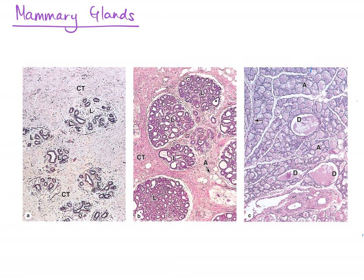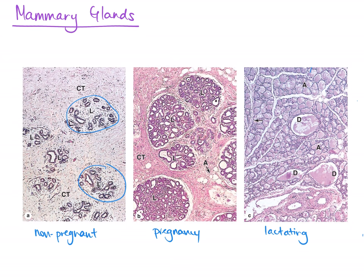In the far left we have a histological section of non-pregnant breast tissue. In the middle we have a section of breast tissue during pregnancy, and finally in the far right we have tissue from a lactating breast. On the leftmost image of the non-pregnant breast we can see structures collectively called lobules. Lobules are made up of ducts and alveoli, or lactiferous ducts.